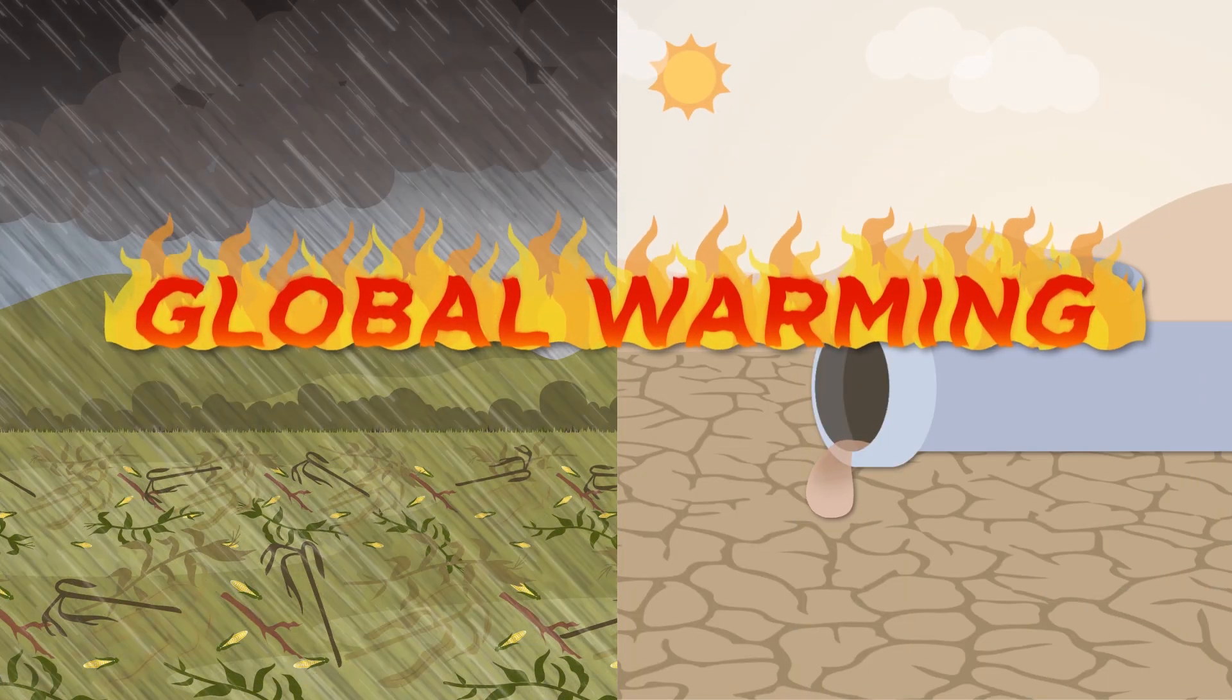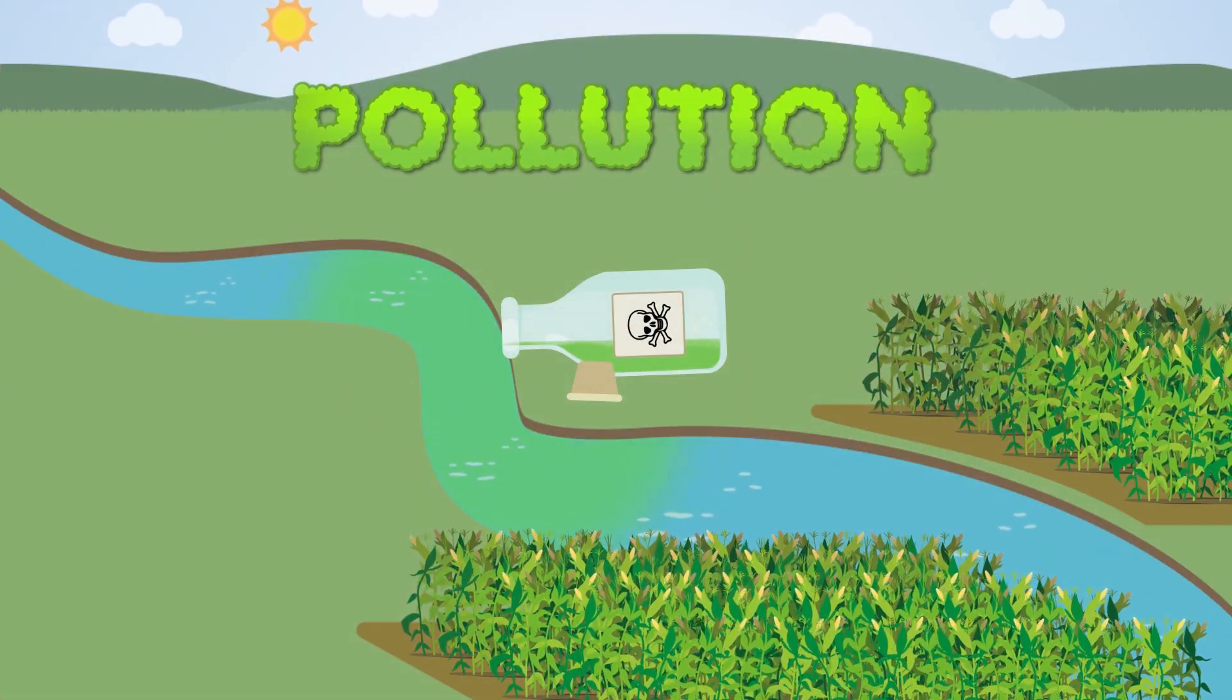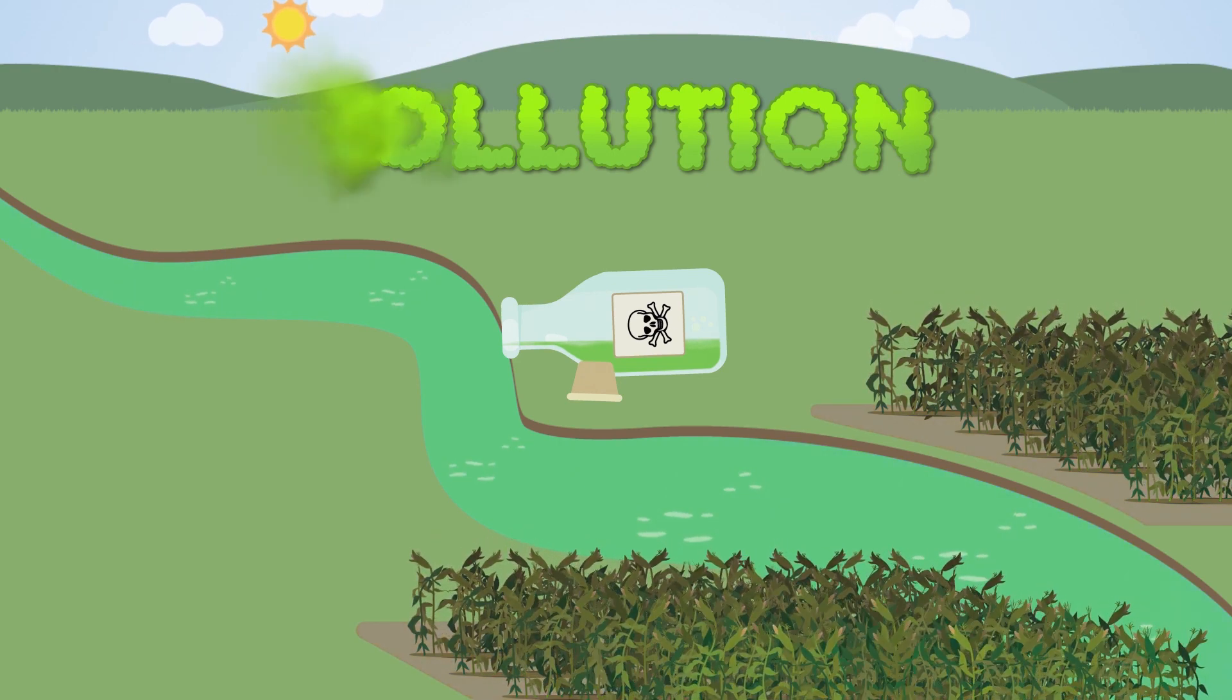These include global warming, more frequent storms and water shortages, and pollution in soil and water streams – issues which can lead to waste and reduced yield.